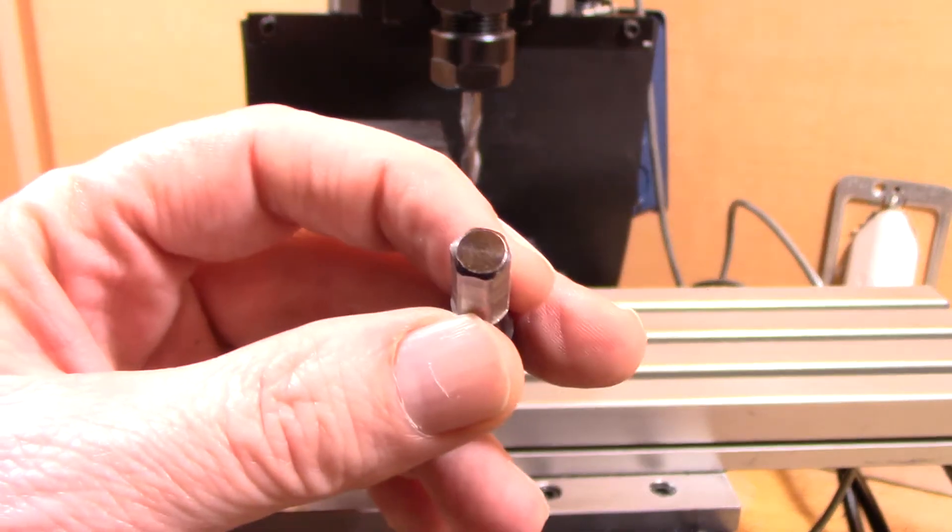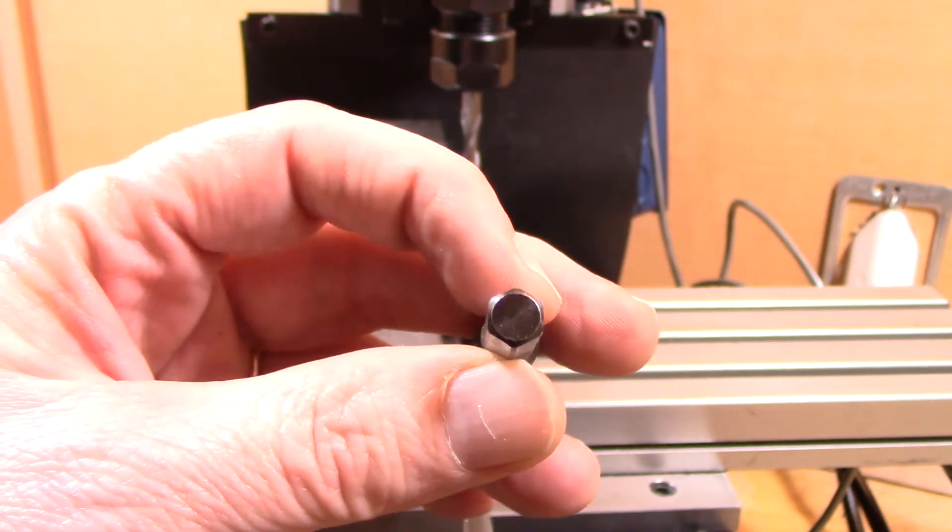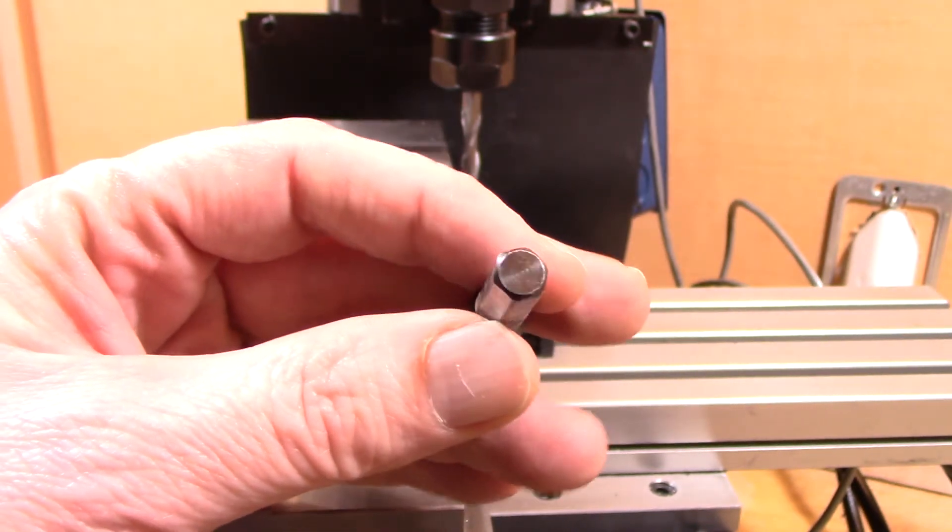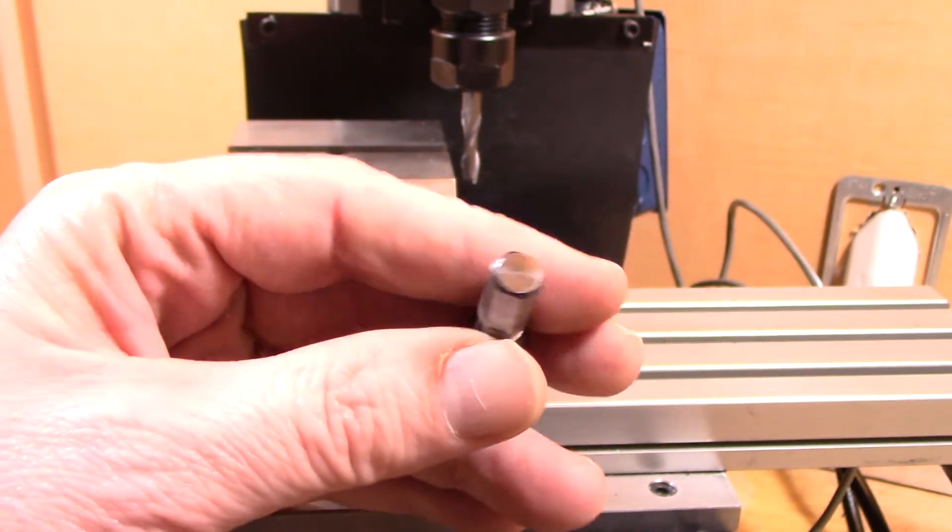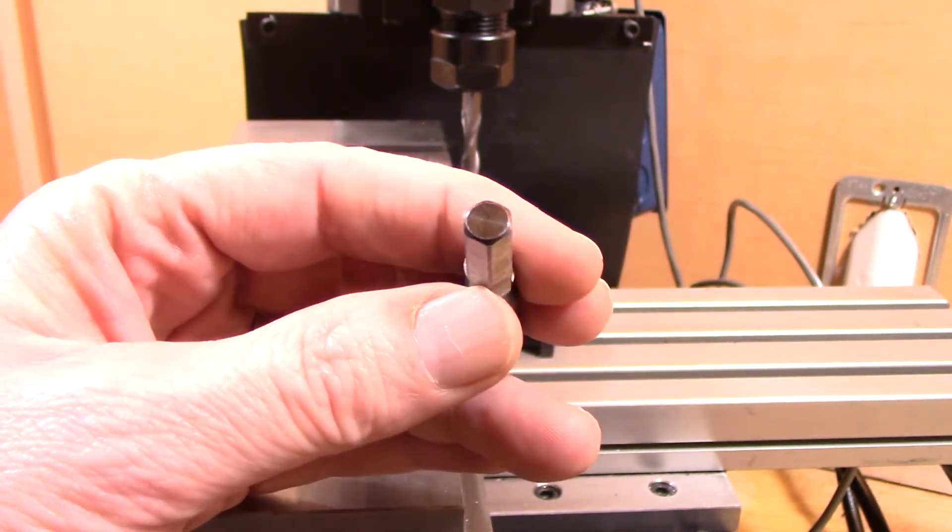Here's the finished milling job. And as you can see, it is certainly close enough to be in the hex now. And so it should stay in the drill chuck without slipping.